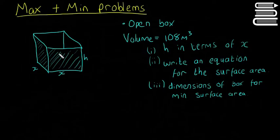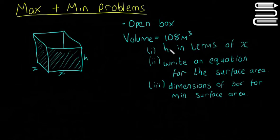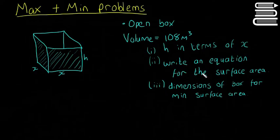We have an open box here — so imagine the top is open, the rest is just cardboard. The volume of the box is 108 metres cubed, so it's going to be a pretty big box. The first part asks us to get h in terms of x, the second part asks us to write an equation for the surface area of the box — that's just the outside surfaces. And number three: find the dimensions of the box that will give the minimum surface area. That's our maximum/minimum problem and we're going to use calculus.